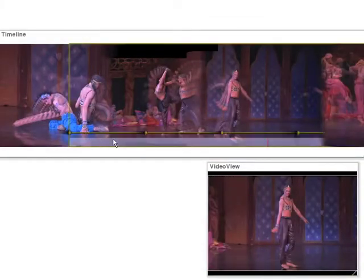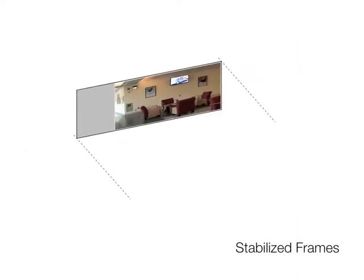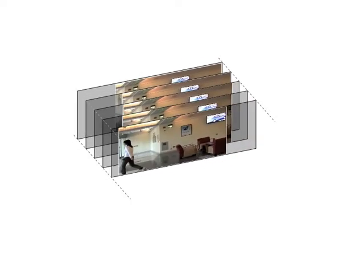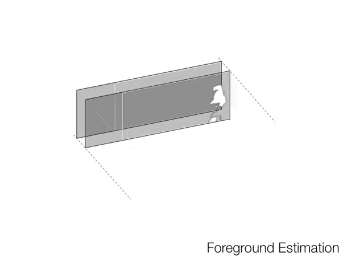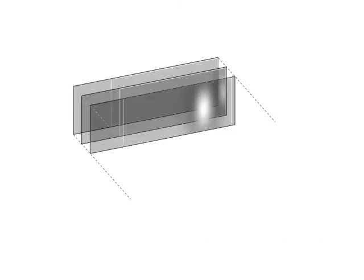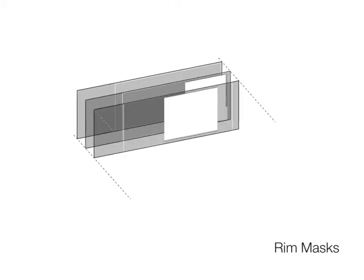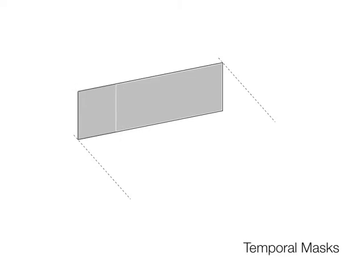The process of obtaining the mosaics is as follows. First, we stabilize the frame using camera motion estimation. Then, we extract candidate foreground pixels. We improve the results with a series of masks, including a Gaussian mask for each foreground object, a rim mask for the frame, and a temporal mask.